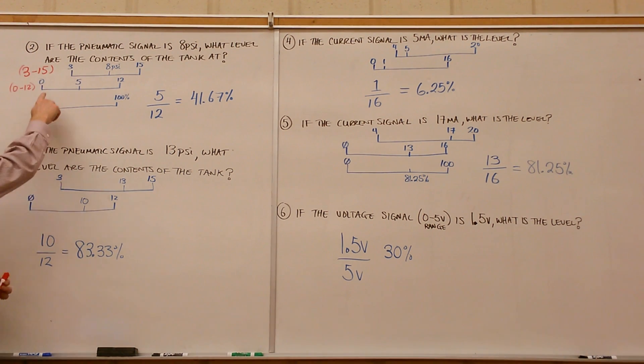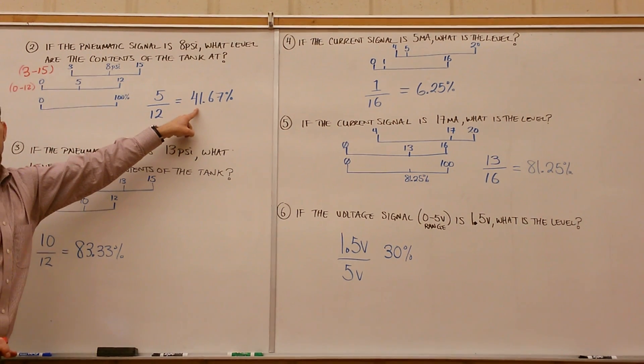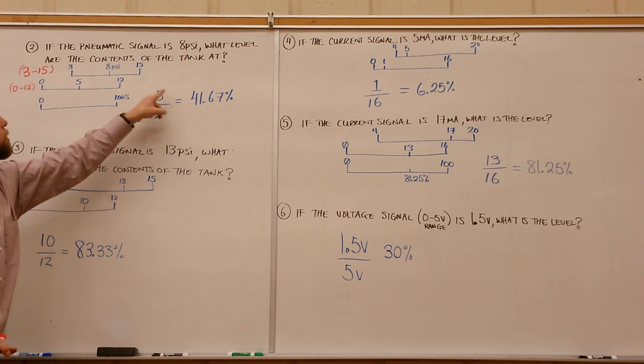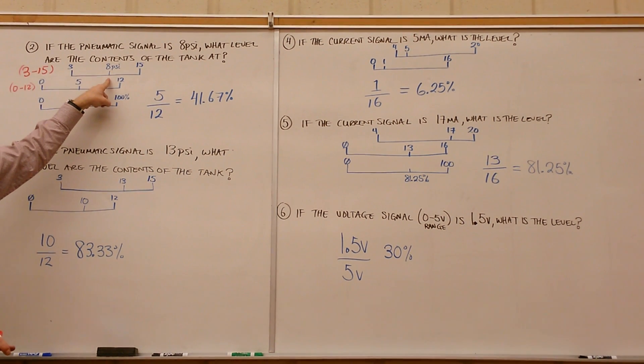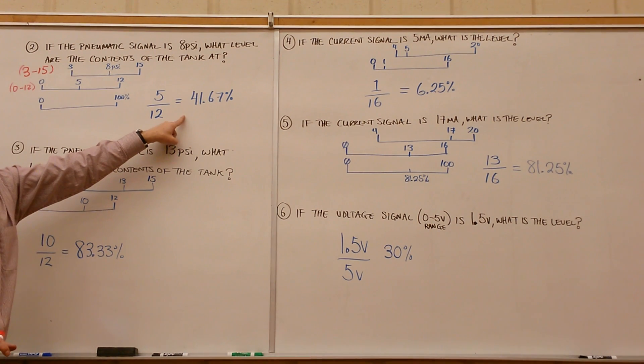Now that we've got something referencing 0, we can take that percentage. So 5 divided by 12 gives you 41.67%. If you're reading 8 psi on a 3 to 15 range, then it's actually 41.67% of that range.